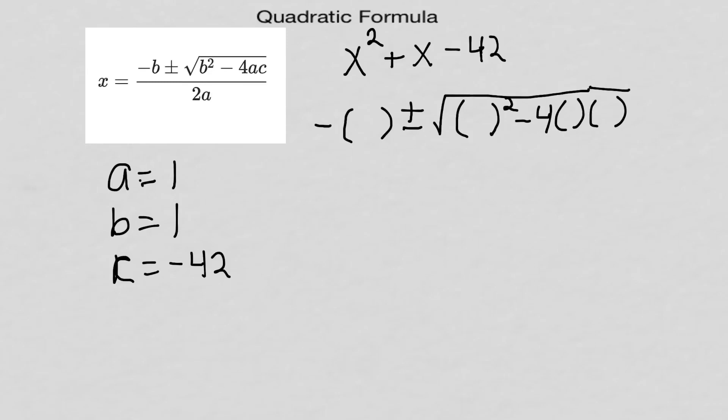I put it over top of 2 and another set of parentheses. Now it's as simple as just going back and filling in my parentheses. The b equals 1, the a's equal 1, and the c equals minus 42.